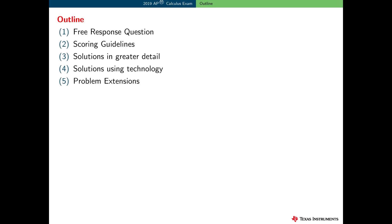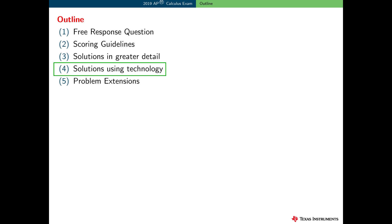Here is an outline of the information presented in this video. I'll start by reviewing the Free Response Question and then the scoring guidelines used at the AP Calculus reading. I'll focus on the solutions presented in these guidelines, not how the points were awarded. I'll present the solution to each problem in a little greater detail than given in the scoring guidelines. I'll show how to use technology to explore and answer parts of this question and to confirm solutions, where appropriate. And because the Free Response Questions are usually very comprehensive, I'll suggest some problem extensions — additional AP Calculus-type questions, some associated with the information given in the problem, and some of these may be calculator-active.